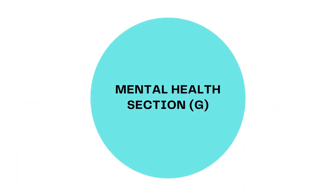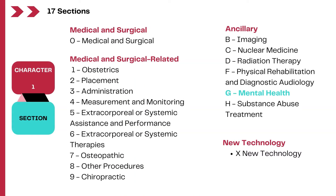The mental health section consists of around 30 codes and classifies procedures by crisis intervention, family psychotherapy, or biofeedback — these are just examples. There are 17 sections in the PCS, and today we are talking about the mental health section. This section represents mental health related procedures such as psychological testing, psychotherapy, counseling, and group therapy.